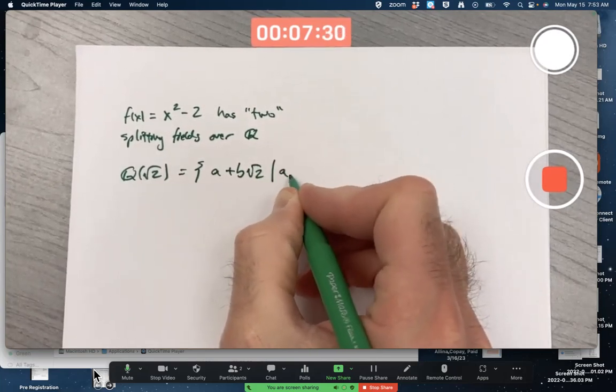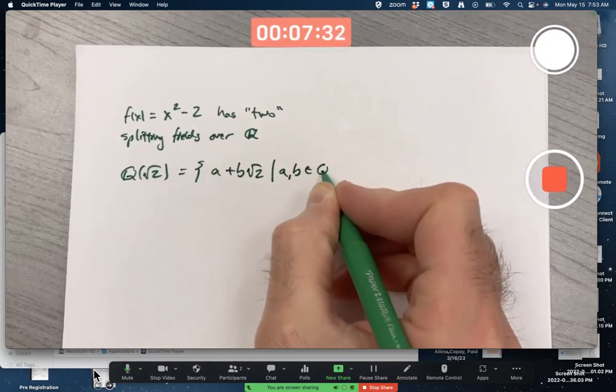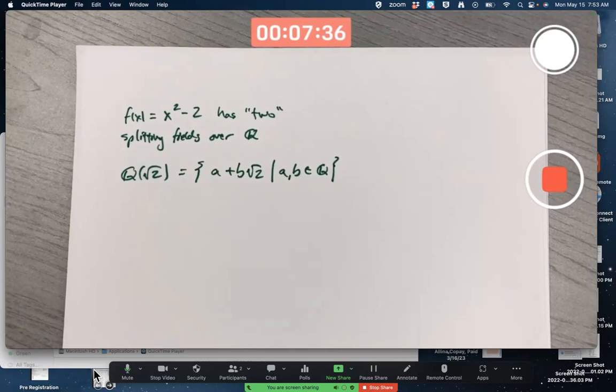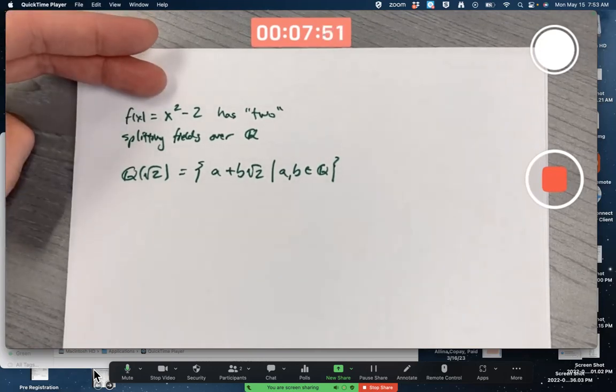As a and b vary over the rational numbers, it's a two-dimensional vector space over the rationals with the basis {1, √2}, and it does contain the two roots of this polynomial, plus or minus √2.